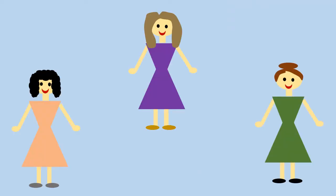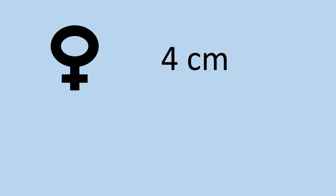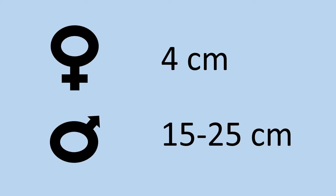Cystitis is more common in women because women's urethra is shorter than men's urethra and it is closer to the anus. The urethra is the last tubular structure of the urinary tract that conducts the urine from the bladder to the outside of the body. Women's urethra is about 4 cm long. Men's urethra is about 15-25 cm long.